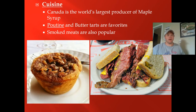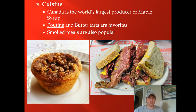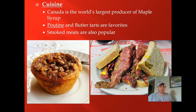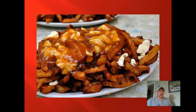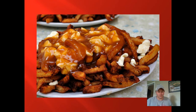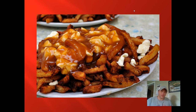For cuisine, Canada is the world's largest producer of maple syrup. Poutine is a delicacy there — it's kind of an unofficial national dish. Here's poutine: it's French fries topped with cheese curds and gravy. Very good — I used to get it occasionally after curling, though it's not something you want to eat too often. Smoked meat is also popular.